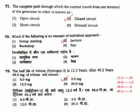Question 71: The complete path through which current travels from one terminal of a generator to another is called — the path on which current moves is called a closed circuit. Correct answer is Option 2. Question 72: Which of the following is an example of an individual approach — a lecture is an individual approach; group meetings, workshops, and fairs are group approaches.